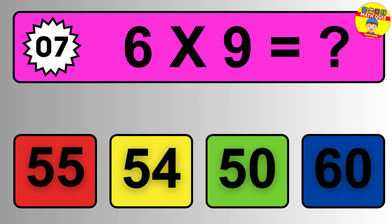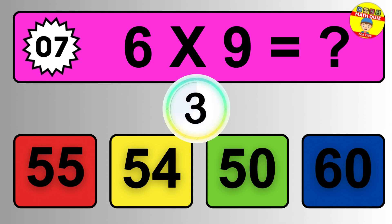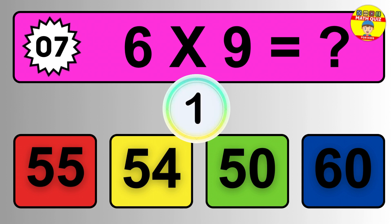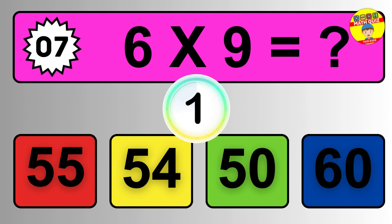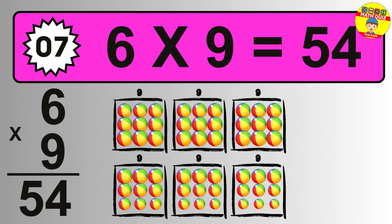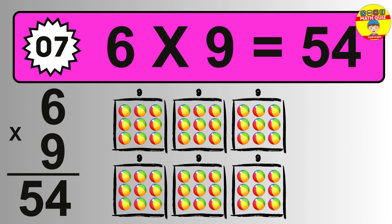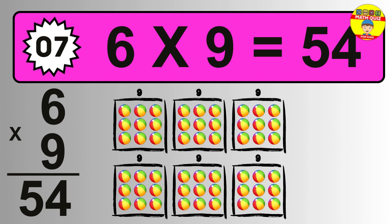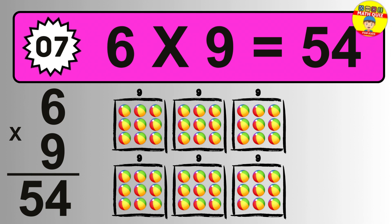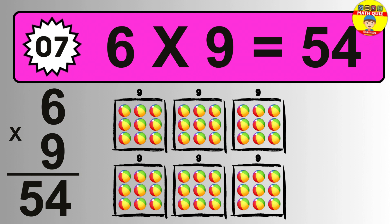Question seven: six times nine equals what? The answer is six times nine is fifty-four. To calculate, we have six groups with nine balls each. So how many balls do we have? Fifty-four balls.